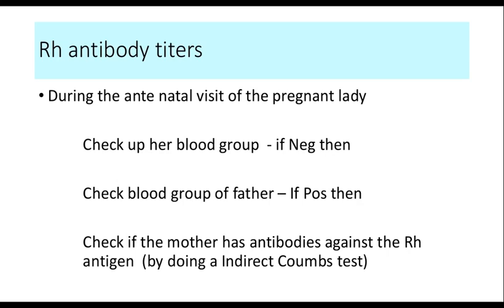What are Rh antibody titers and how do we perform them? During the first antenatal visit of a pregnant woman, it is routine to do a blood group test. If the mother's blood group is Rh negative, we then check the blood group of the father. Only when the father is Rh positive and the mother is Rh negative do we need to check whether the mother has any irregular antibodies — specifically antibodies against Rh antigens. This is done using the indirect Coombs test.